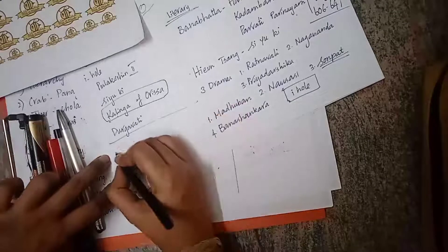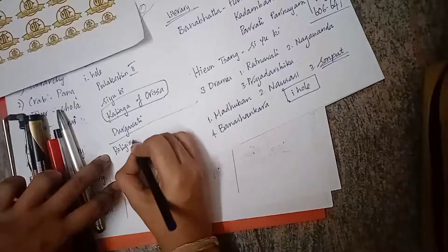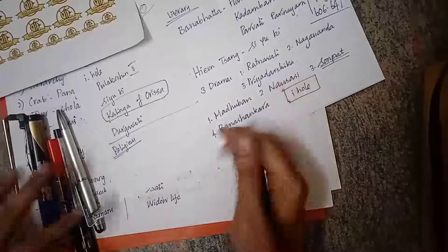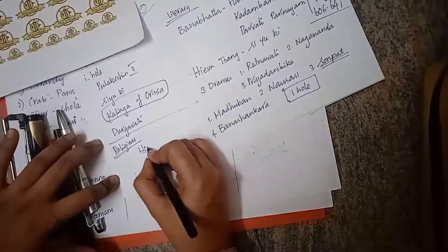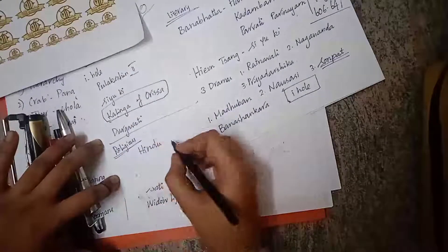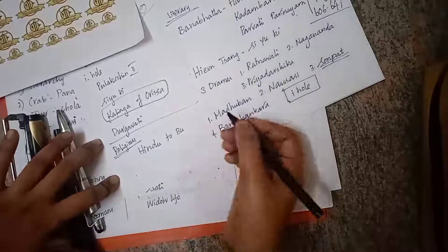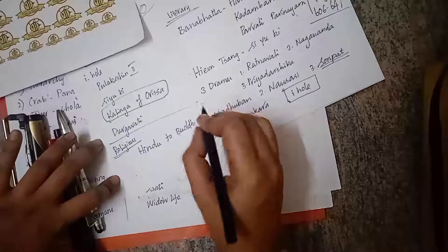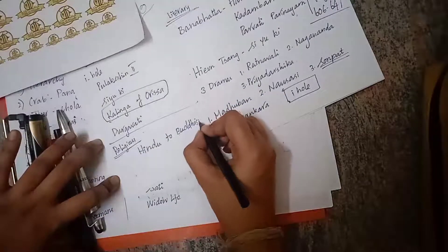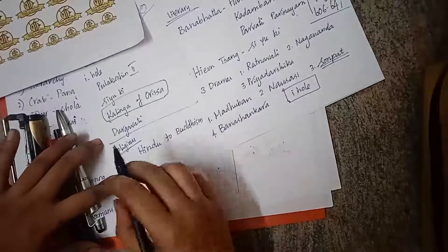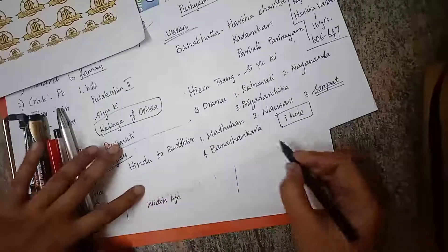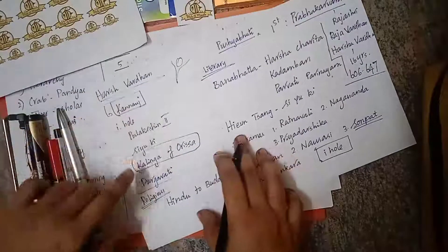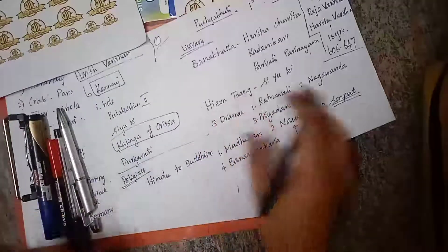Regarding Harsha's religious life, he was first a Shiva worshipper (Hindu), then he converted to Buddhism. He first followed Hinayana Buddhism, then was converted to Mahayana Buddhism by Yuanzhang (Hayun Sang). Harsha also changed his capital to Kanoja.